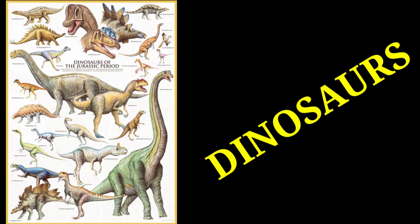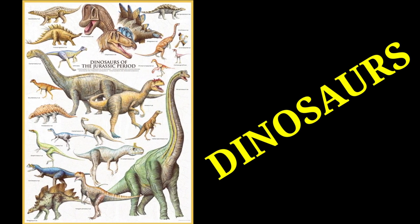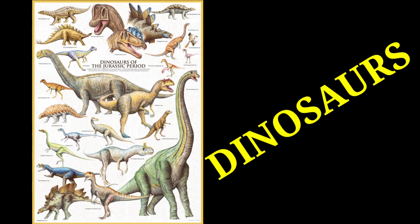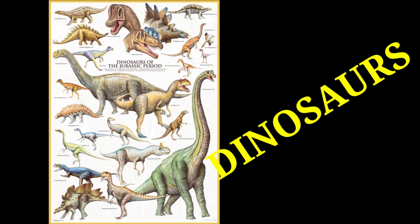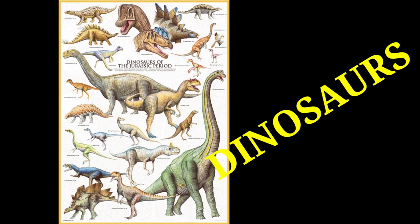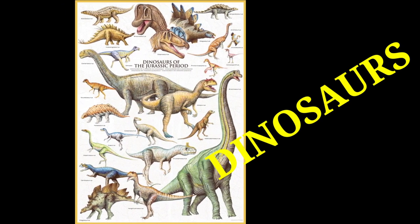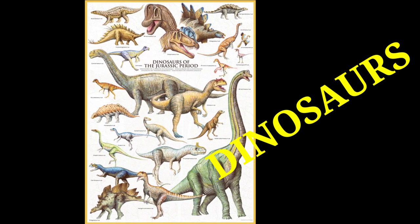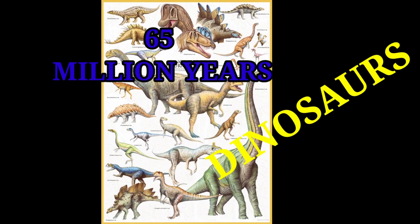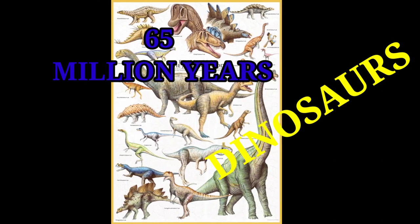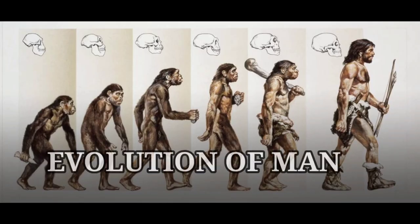Some species became extinct when they were unable to adapt to climate changes or the dominance of other species. For example, dinosaurs, which once were a dominant species on earth, became extinct about 65 million years ago.